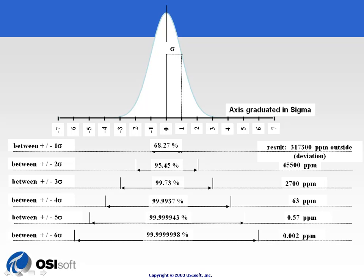If you want to convert the proportion of a normally distributed variable fitting between plus 3 sigma and minus 3 sigma — that is, 99.33% — into a number of rejects, that would translate into 2,700 parts per million rejects in production.